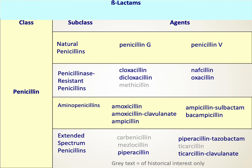The third group is the aminopenicillins — primarily amoxicillin and ampicillin. Amoxicillin is a surprisingly effective agent for a number of pathogens, with reasonably good oral anaerobe coverage. It's used for otitis media, strep throat, skin and soft tissue infections, and prophylaxis for bacterial endocarditis in patients undergoing dental procedures. Amoxicillin-clavulanate and ampicillin-sulbactam extend its spectrum further and are pretty widely used agents.